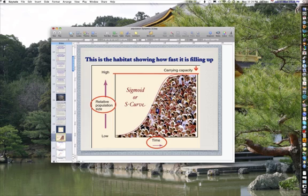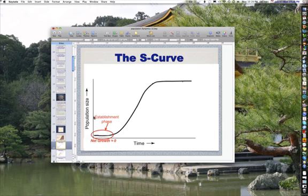And as the population grows over time and begins to approach carrying capacity, it decelerates and comes into equilibrium with the environment, just vacillating around that carrying capacity line. At first, there is an establishment phase where net growth is almost zero.